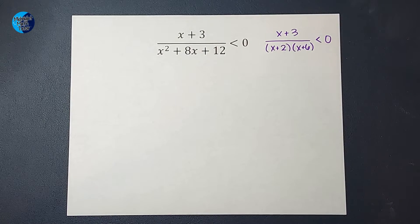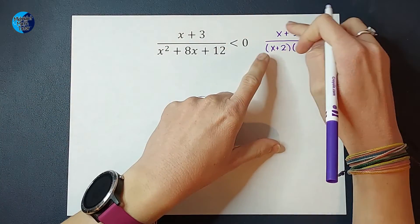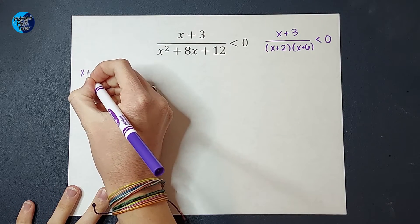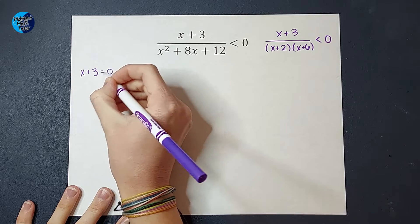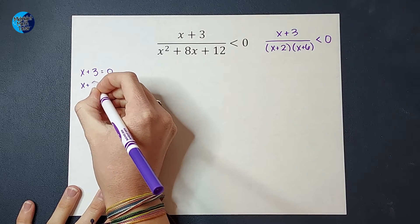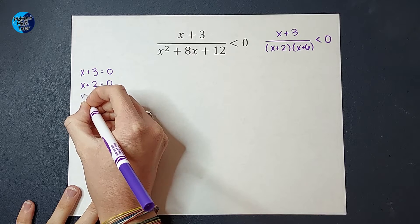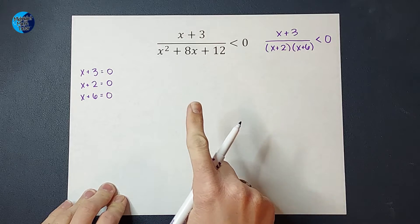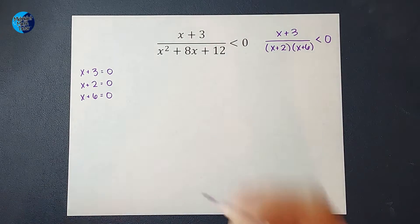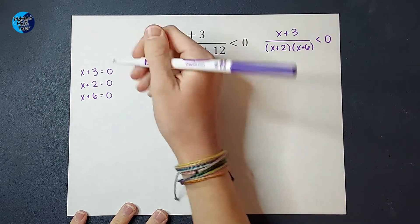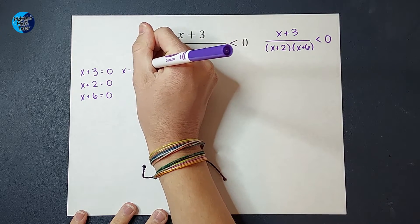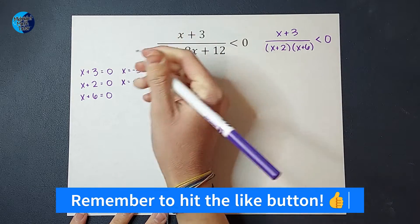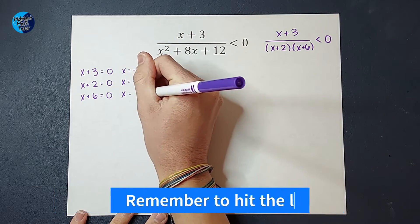From here, the next thing I'm going to do is I'm going to set each of these equalities equal to zero. So I'm going to take x plus 3, set it equal to zero, x plus 2 equal to zero, and x plus 6 equal to zero. This is where I was saying, if you're like, why are we doing that? I'll explain it at the end. Okay, I'm going to solve each of these for x. So on this top one, I would subtract 3 from both sides, get x equals negative 3. Next one, I'm going to subtract 2 from both sides and subtract 6 from both sides.